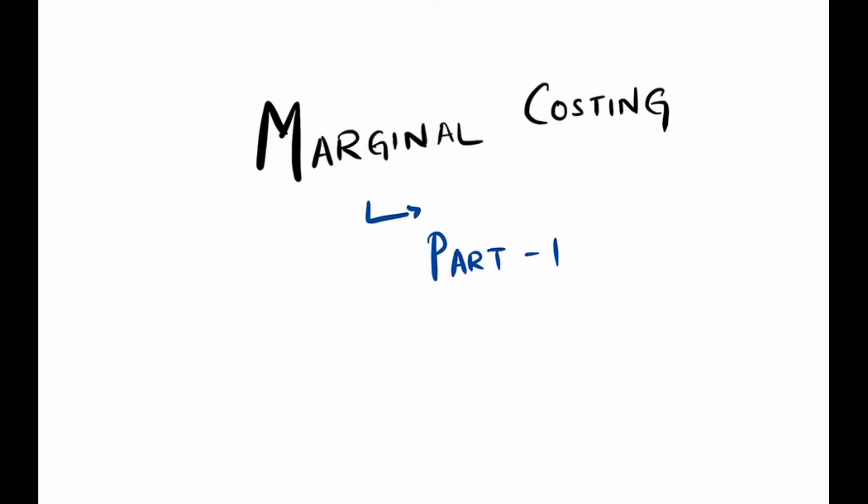Hi everyone, today we will be learning about marginal costing. Now what is marginal costing? In absorption costing, both variable costs and overheads are recovered on a per product basis. Fixed production overheads were treated as part of the product cost, whereas under marginal costing we are going to divide our variable cost and fixed cost.